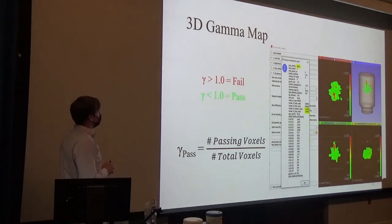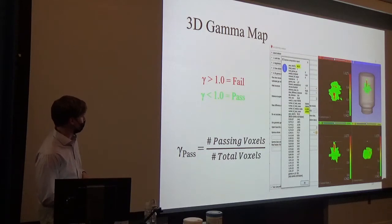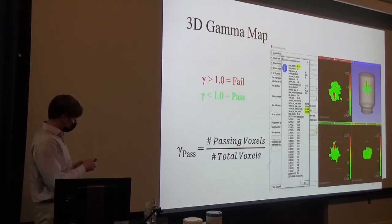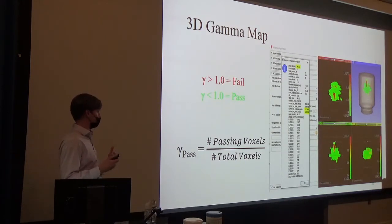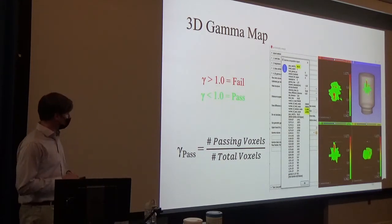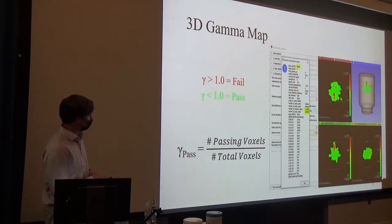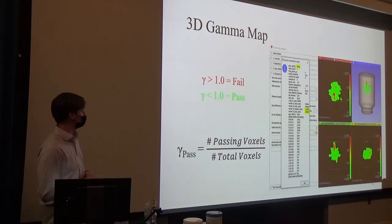We receive a 3D gamma map looking something like this. To get the gamma pass rate, we take the number of passing voxels over the total number of voxels to get our gamma value — in this case 96.92%, which is really good. Greater than one fails, less than one passes. You can see we get some spatial information as to where we passed and where we failed. It's also important to note that this one calculation is being repeated over a hundred thousand times, which illustrates the computational power needed to perform this analysis.